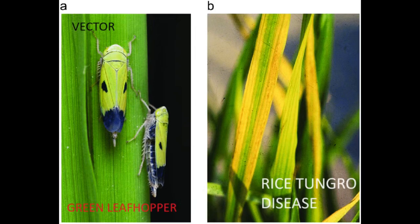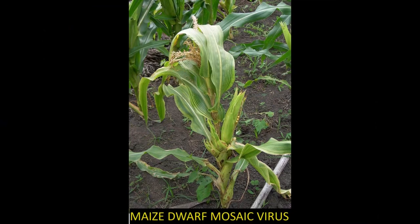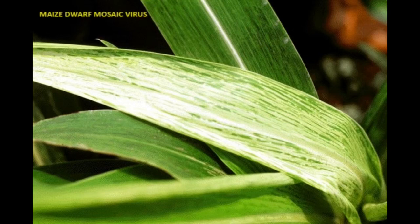Maize Dwarf Mosaic Virus belongs to the potyvirus genus and is transmitted by aphids. Infected maize plants display stunting, mottling, and yellowing of leaves. Severe infections can lead to reduced kernel development and yield losses.